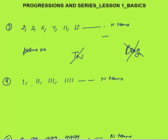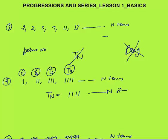The fourth sequence is 1, 11, 111, 1111 up to nth terms — is this a progression? Yes. Term number 1 has one '1', term number 2 has two '1's, term number 3 has three '1's, term number 4 has four '1's. So term number n will have '1' repeated n times. We can find the nth term by observing the pattern, so this is a progression.